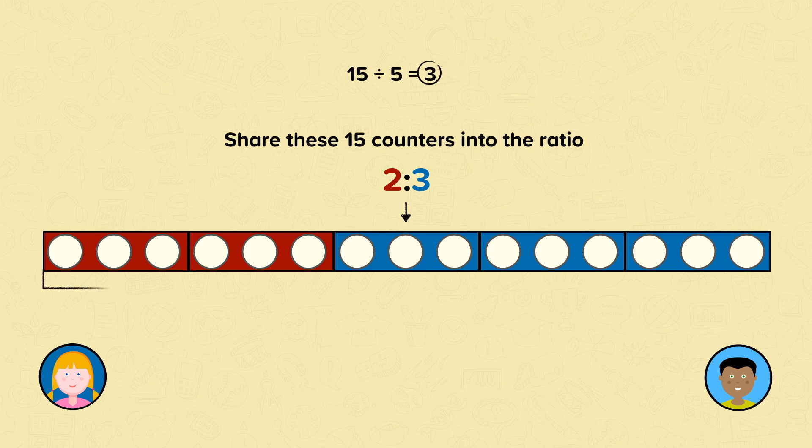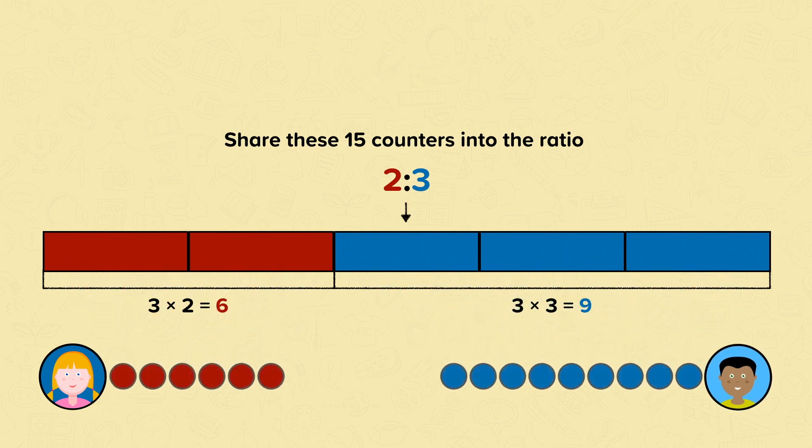The girl has two parts: 3 counters times two parts equals 6. The boy has three parts: 3 counters times three parts equals 9. The girl has six counters, the boy has nine.